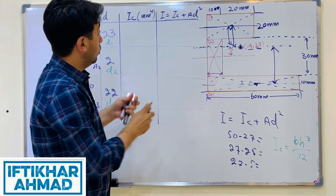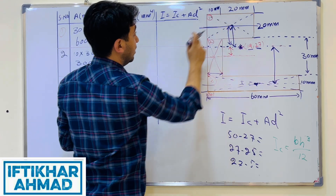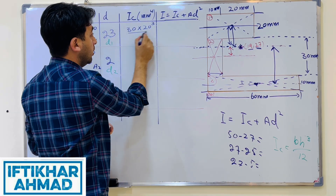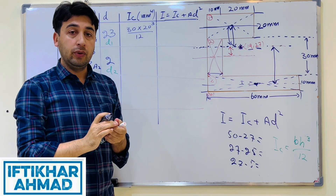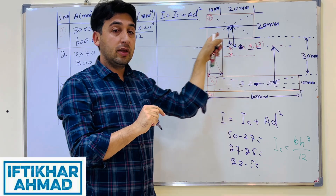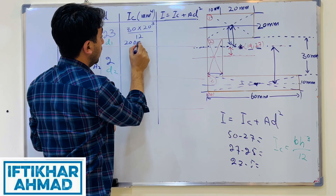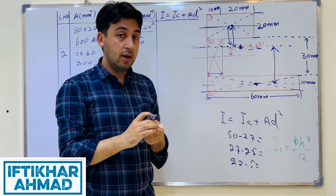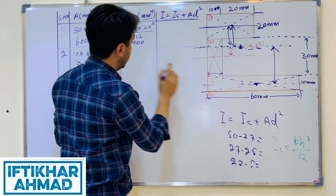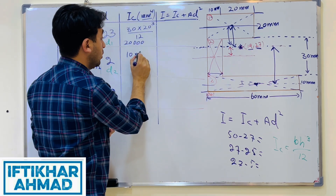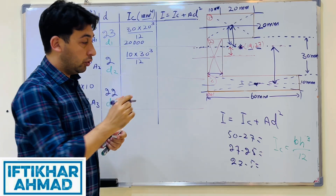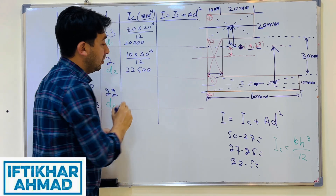For shape 1: IC1 = 30 × 20³ / 12 = 20,000 mm⁴. For shape 2: IC2 = 10 × 30³ / 12 = 22,500 mm⁴.